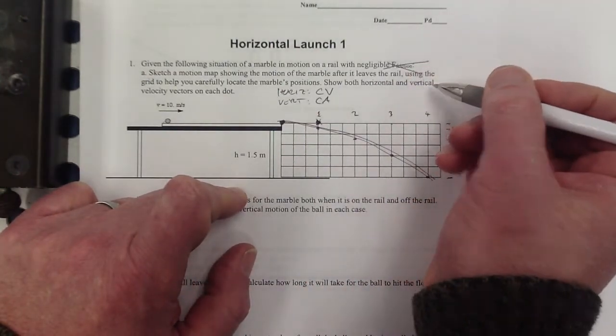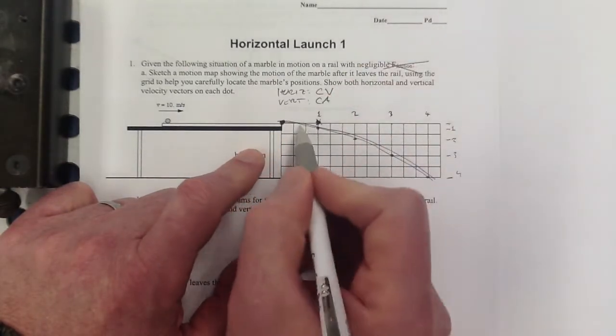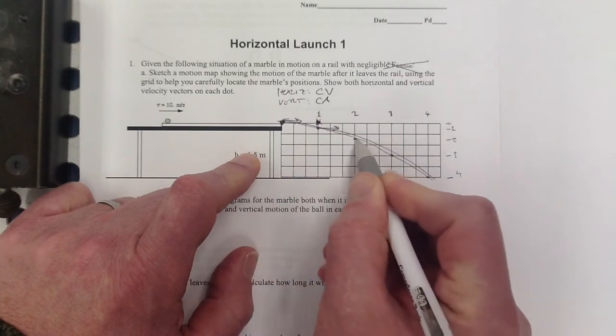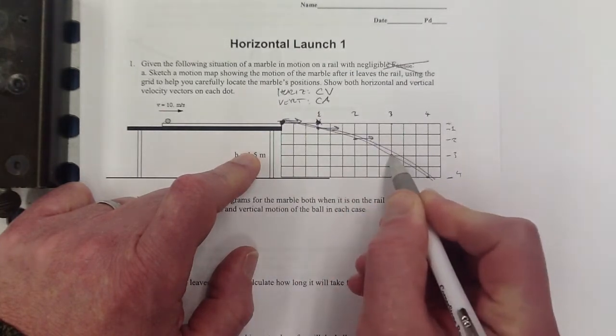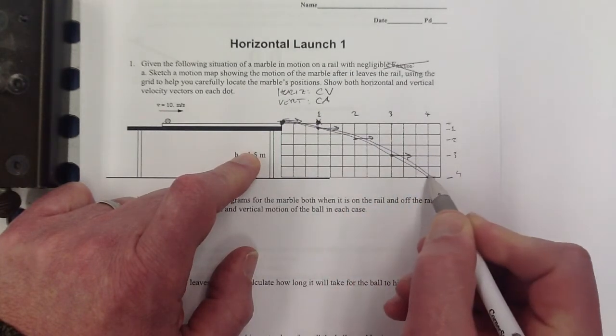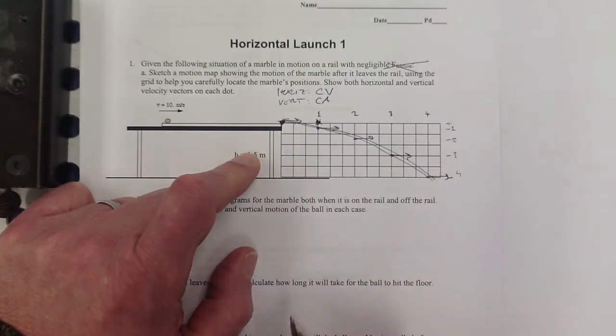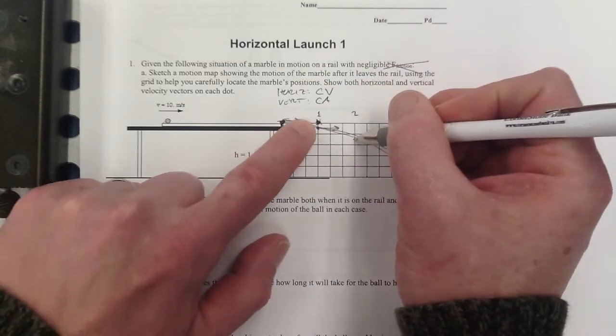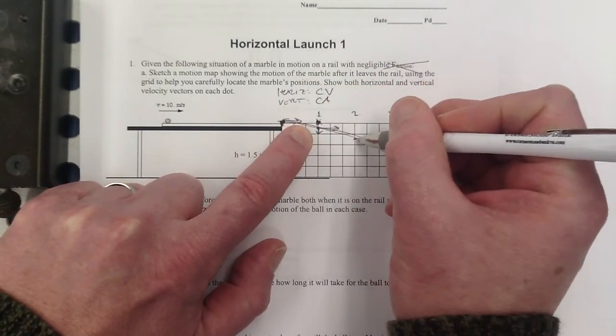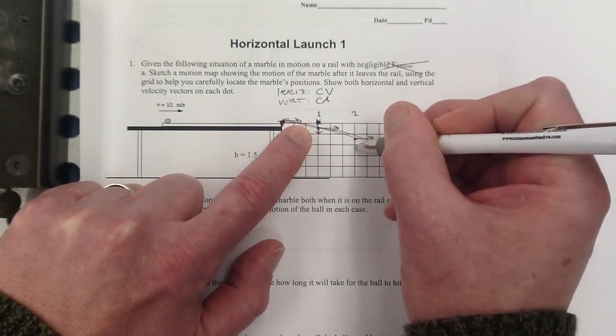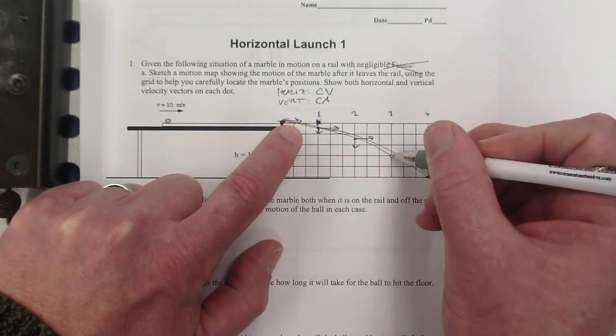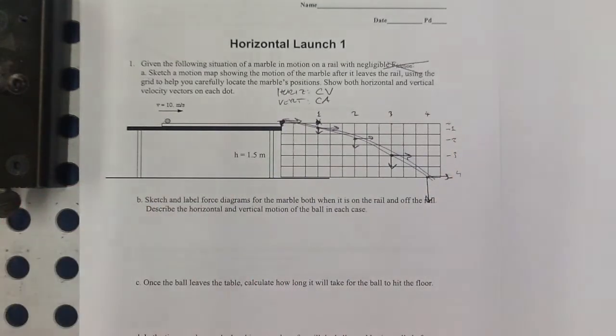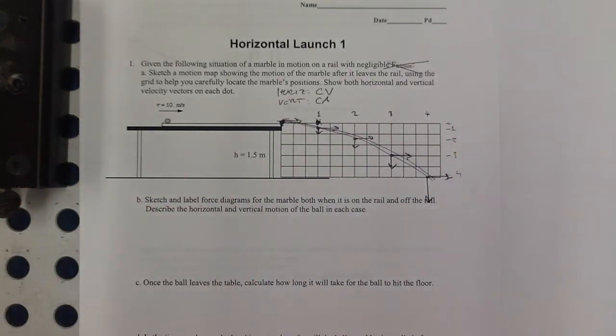And we want to show horizontal and vertical velocity vectors. Well, the horizontal ones go halfway to the next horizontal. Right? Halfway to the next one. And then the vertical ones also go halfway to the next one. So a tiny little arrow there. I'm going halfway to here. Halfway to there. Halfway to there. And those should be getting bigger. Alright. That looks pretty good.